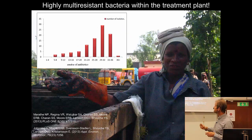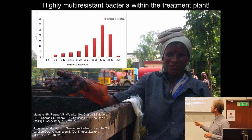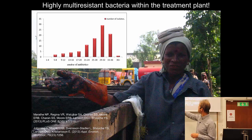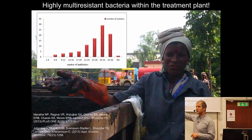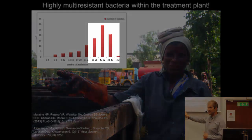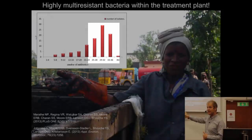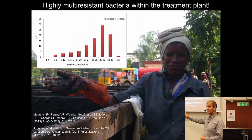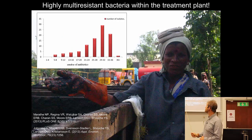Let's look at how the bacteria look in this treatment plant. Here are the resistant patterns of bacterial isolates from the treatment plant. We've tested different isolates to see how many antibiotics they are resistant to. There's not a single isolate resistant to just one to four antibiotics — a typical bacterium was resistant to 30 out of 39 tested antibiotics. I've never seen any environment with such extreme patterns of multi-resistance as this anywhere.